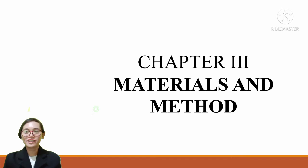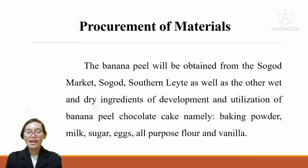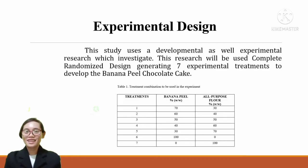Chapter 3 Materials and Method. Requirement of Materials: The banana peel will be obtained from the Sogod Market, Sogod Southern Leyte, as well as the other wet and dry ingredients for the development and utilization of banana peel chocolate cake, namely baking powder, mild sugar, eggs, all-purpose flour, and vanilla. Experimental Design.